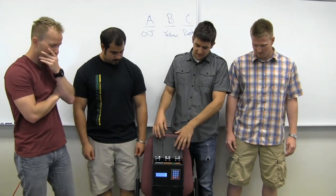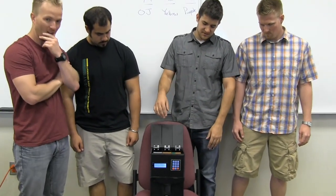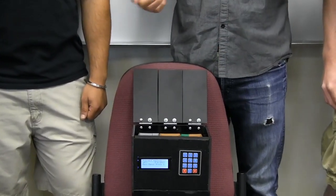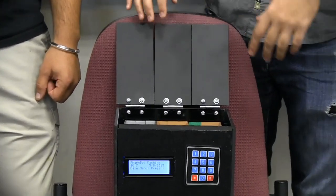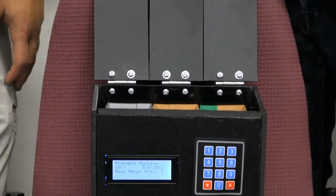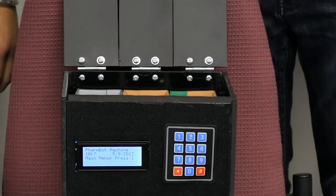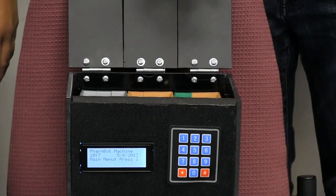We set ours up so it can dispense three different medications. We just use gobstoppers for a demo drug. In silo A we have orange gobstoppers, silo B we have yellow gobstoppers, and in the last silo we have purple.